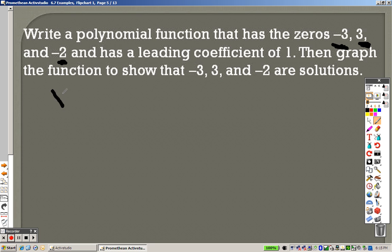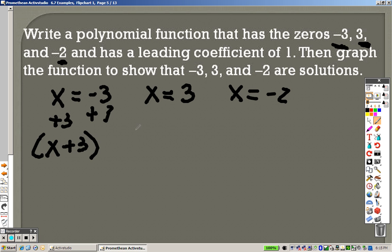They're basically saying that x equals negative 3, x equals 3, x equals negative 2. So you basically solve each of these. I add 3 to both sides to get x plus 3. I subtract 3 to both sides to get x minus 3. I add 2 to both sides to get x plus 2.